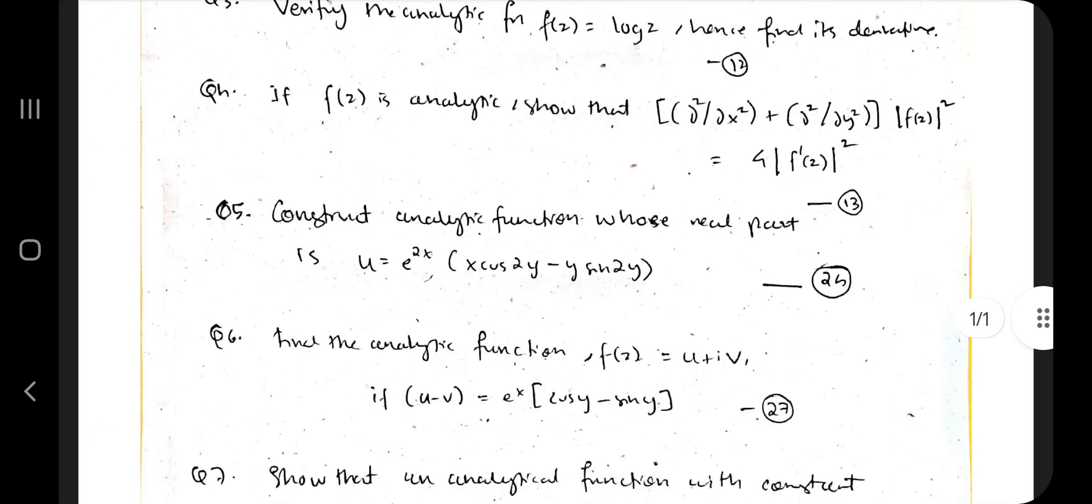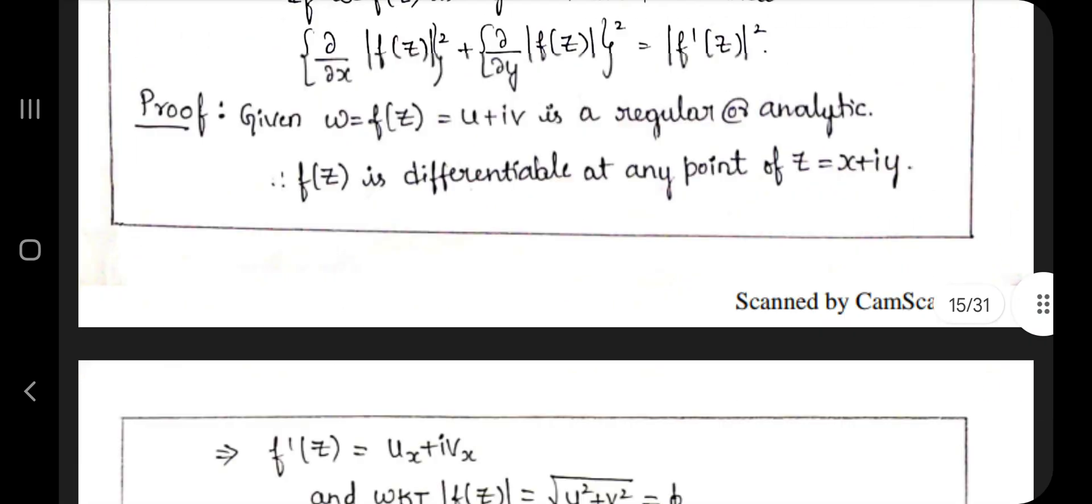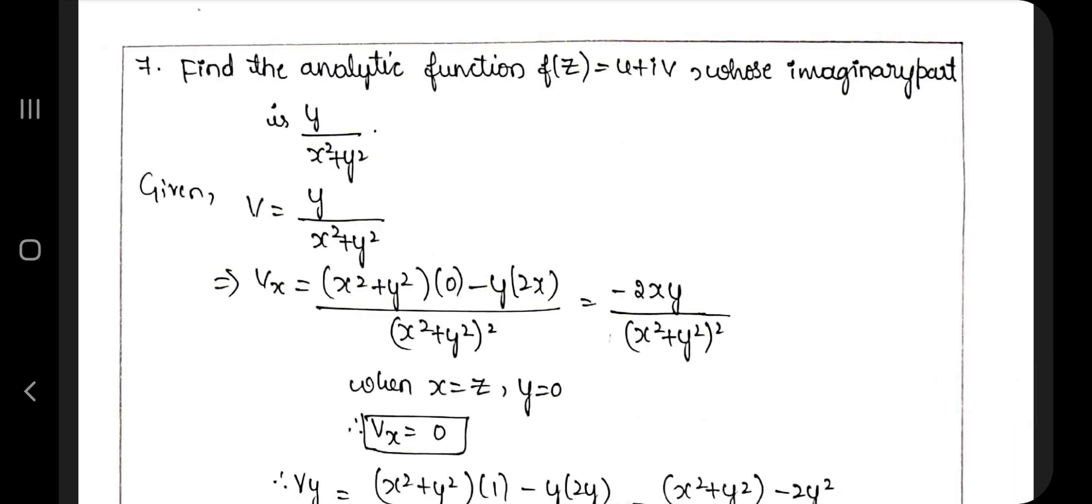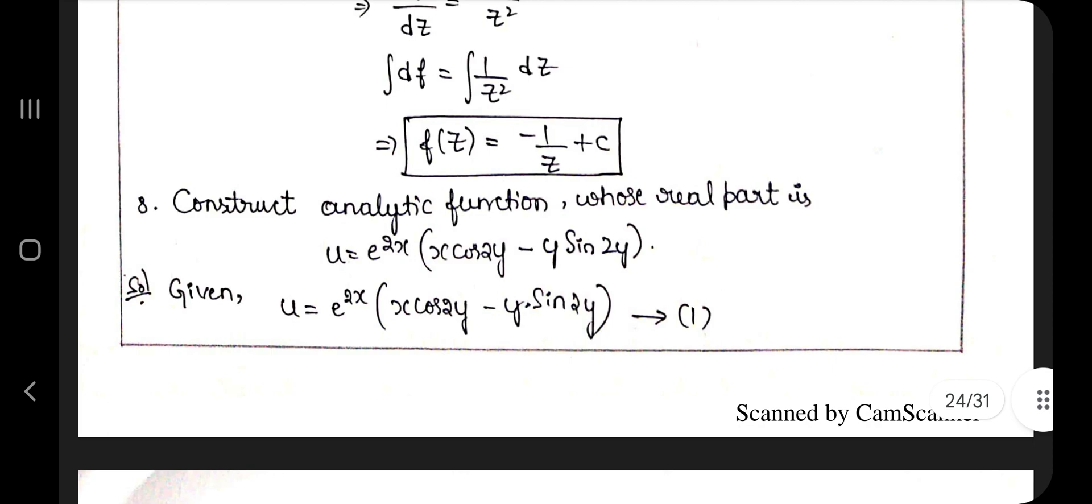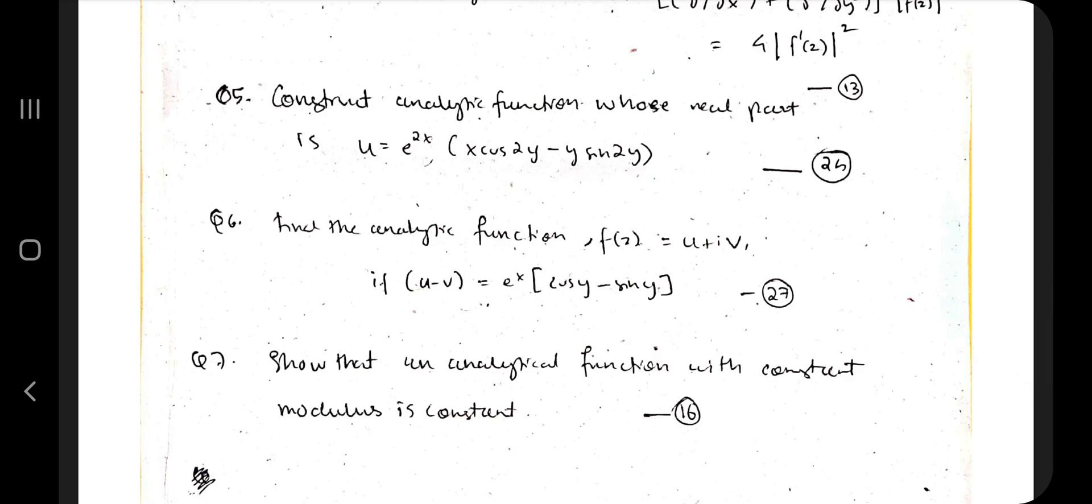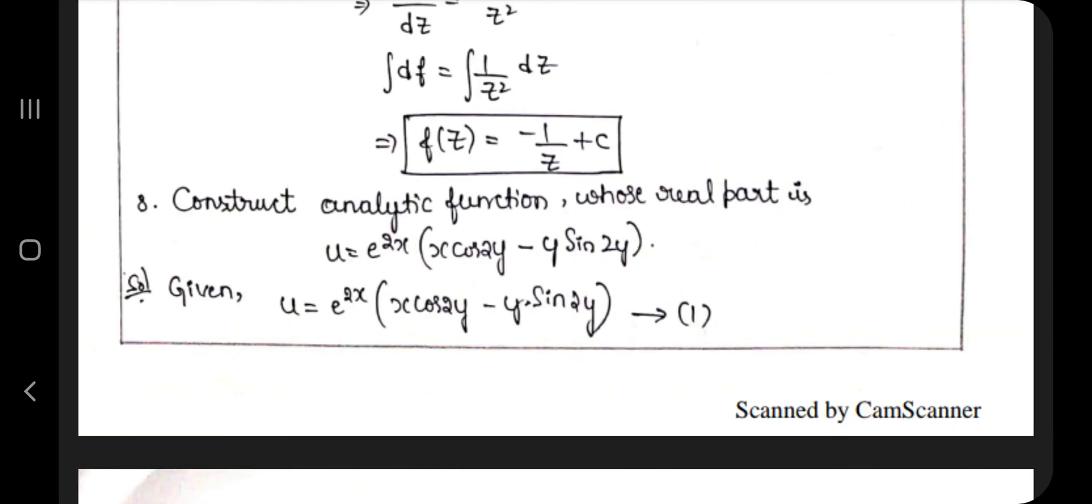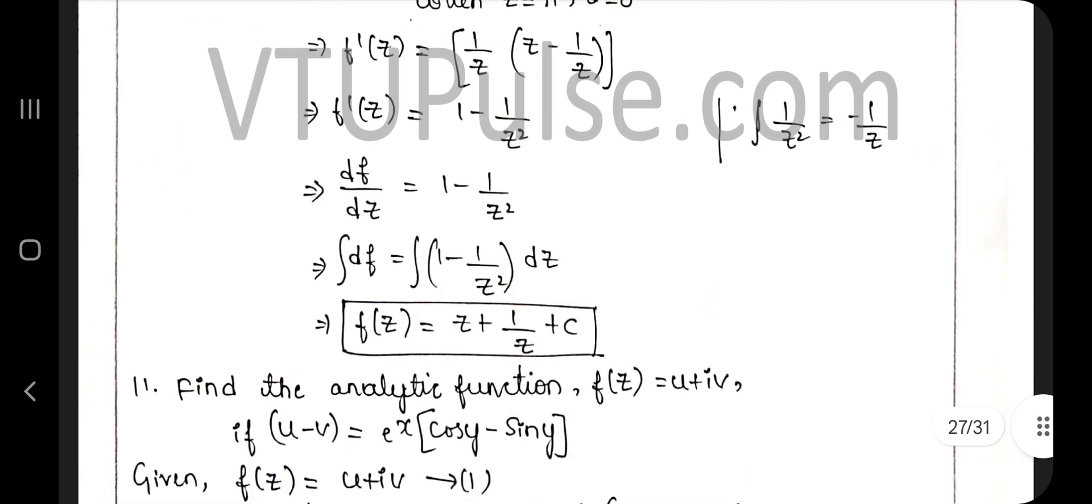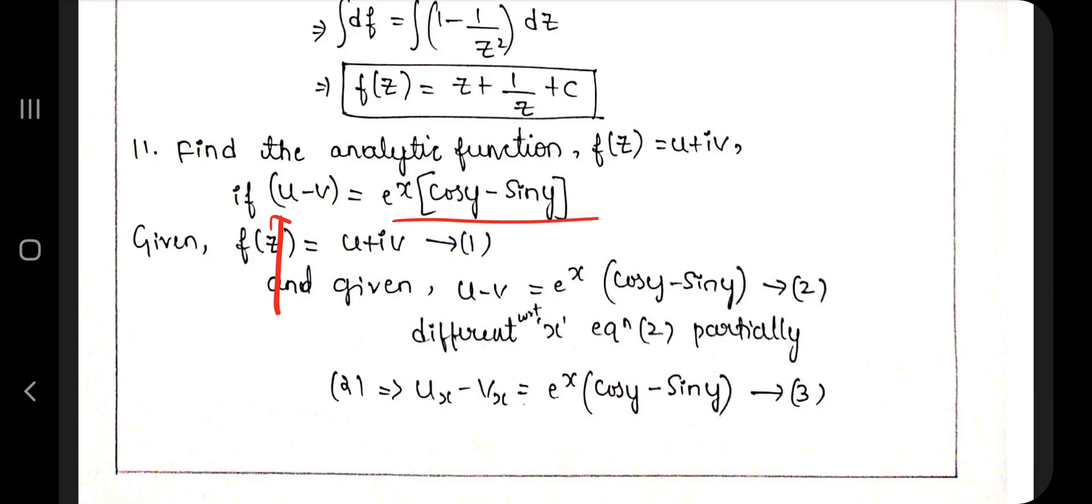Next type of question is construct the analytic function whose real part is given. Either they can give the real part or the imaginary part. Do as many questions as possible. If you go to page number 24, you will find these types of questions where either the imaginary part will be given or the real part will be given, and you are supposed to calculate the u plus iv function. Another type of question is where they give u minus v equals something. In that case, how to find out is on page number 27.